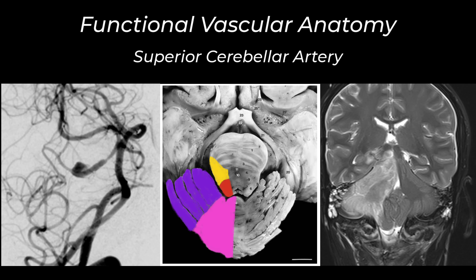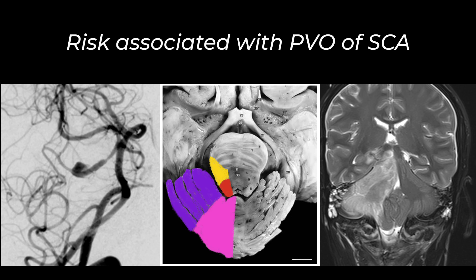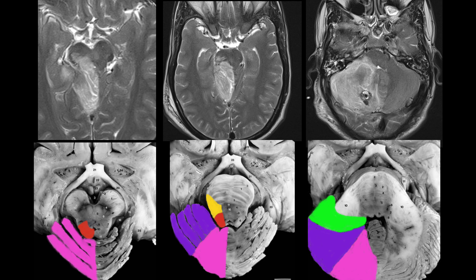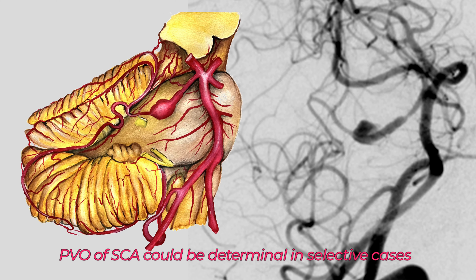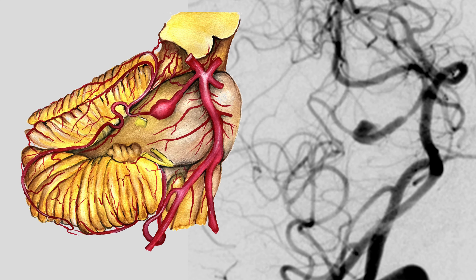In this video we have understood the functional vascular anatomy of the superior cerebellar artery. We have also understood the risk of treating peripheral aneurysms of the superior cerebellar artery by parent vessel occlusion — it may have grave consequences, especially if the territory supplied by the superior cerebellar artery is extensive and unsupported by the ipsilateral PICA or AICA territory.